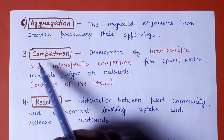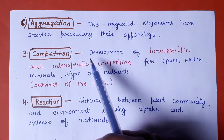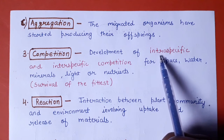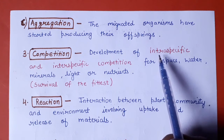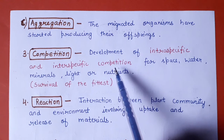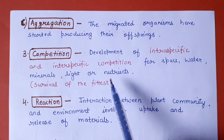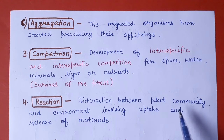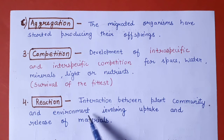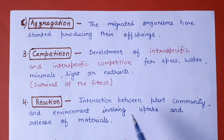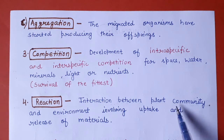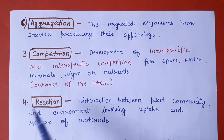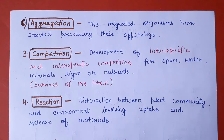After aggregation, there will be competition because many different species of plants have grown in the area, leading to intraspecific as well as interspecific competition among the plants for space, water, minerals, light, and nutrients. The fourth step is reaction, which involves the interaction between the plant community and the environment. As environmental conditions change and the plant community responds, there is a reaction involving the uptake and release of materials between the plant community and the environment.